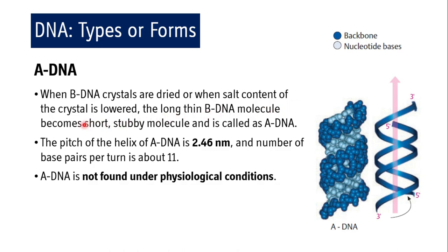When B-DNA crystals are dried or when the salt content of the crystal is lowered, the long thin B-DNA molecule becomes short and stubby — that is called A-DNA. The pitch of A-DNA is 2.46 nanometers, less than B-DNA, and the number of base pairs per turn increases to 11 because they are more compactly placed. A-DNA is not found under physiological conditions.